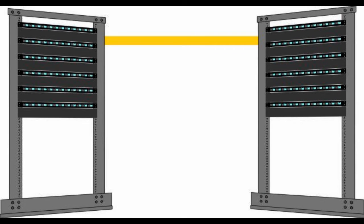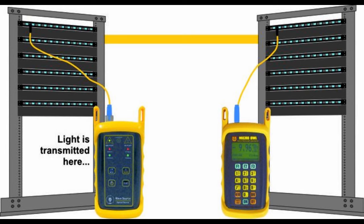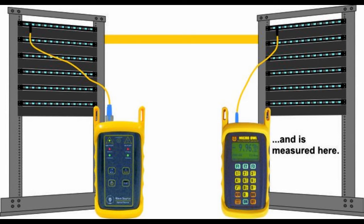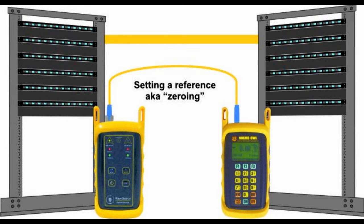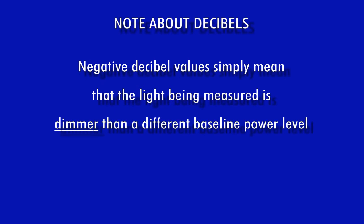Testing a fiber optic cable involves two units — a transmitter and receiver — connected to patch panels on opposite ends of the link. With fiber optics, this is done with a test kit containing a light source and an optical power meter: the light source shines light into one end of the fiber, and the power meter measures the light at the other end. This measurement is only meaningful when you know how much light you started with, so you set a reference by connecting the power meter and light source with a short patch cable — usually one meter long — and record the value. Optical fiber measurements are expressed in decibels, and when a decibel value is negative, it simply means the light being measured is dimmer than the baseline power level.